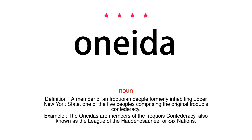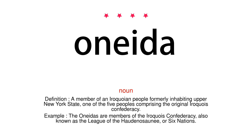Noun. Definition. A member of an Iroquoian people formerly inhabiting Upper New York State, one of the five peoples comprising the original Iroquois Confederacy. Example. The Oneidas are members of the Iroquois Confederacy, also known as the League of the Haudenosaunee, or Six Nations.